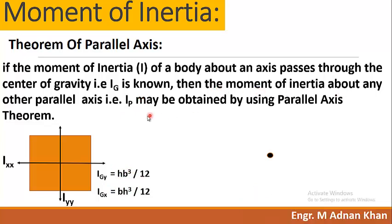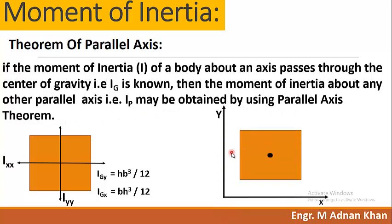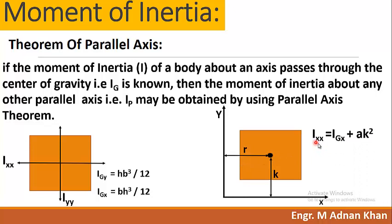The theorem states that if these centroidal values are known, the moment of inertia about any parallel axis — that is IP — may be obtained using the Parallel Axis Theorem. As shown here, we draw the axis at some distance apart from the figure. K is the radius of gyration along the Y-axis, and R is the radius of gyration along the X-axis. The moment of inertia IXX about the X-axis is then calculated accordingly.